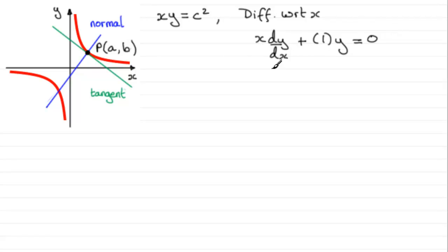So rearranging this to make dy by dx the subject, we therefore have dy by dx equals minus Y over X.